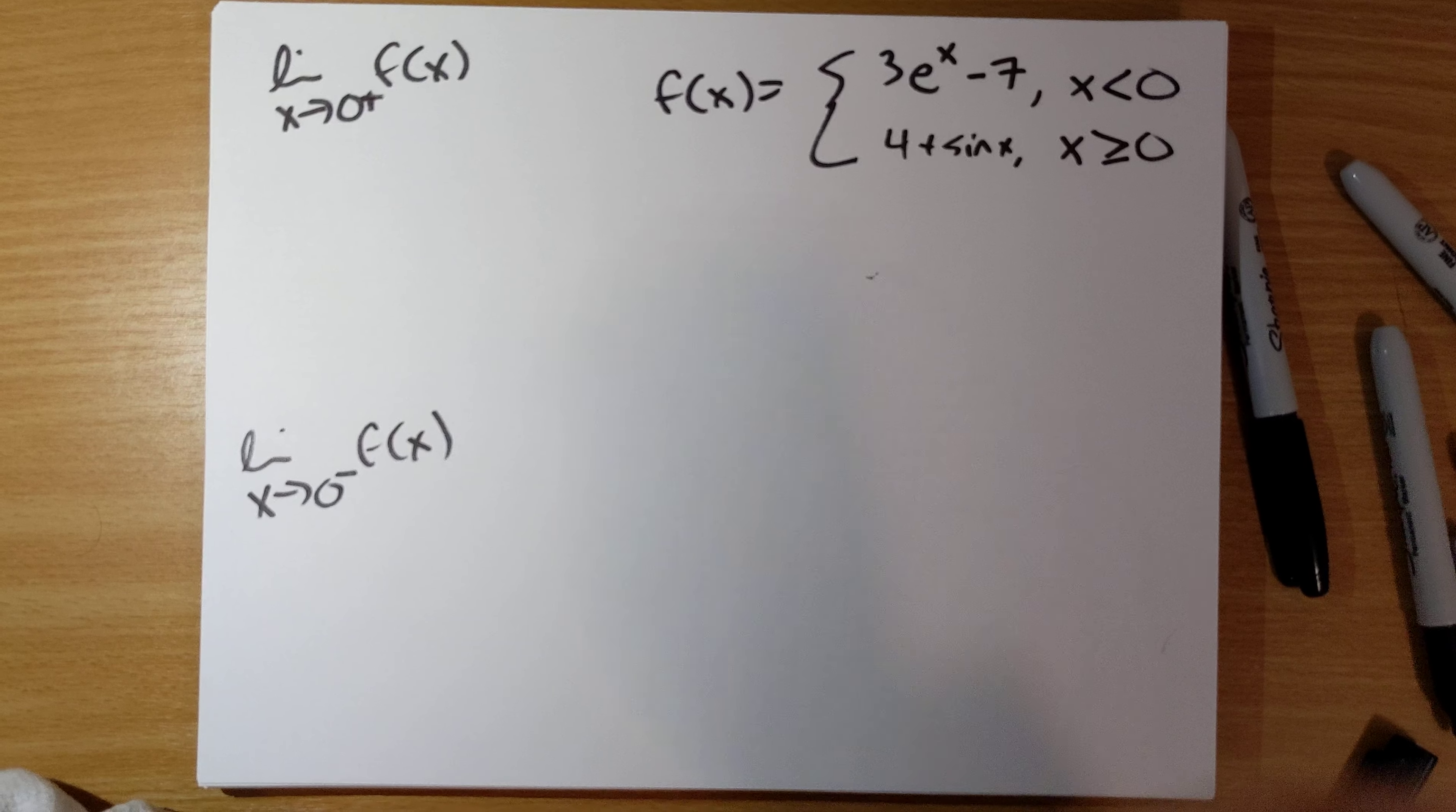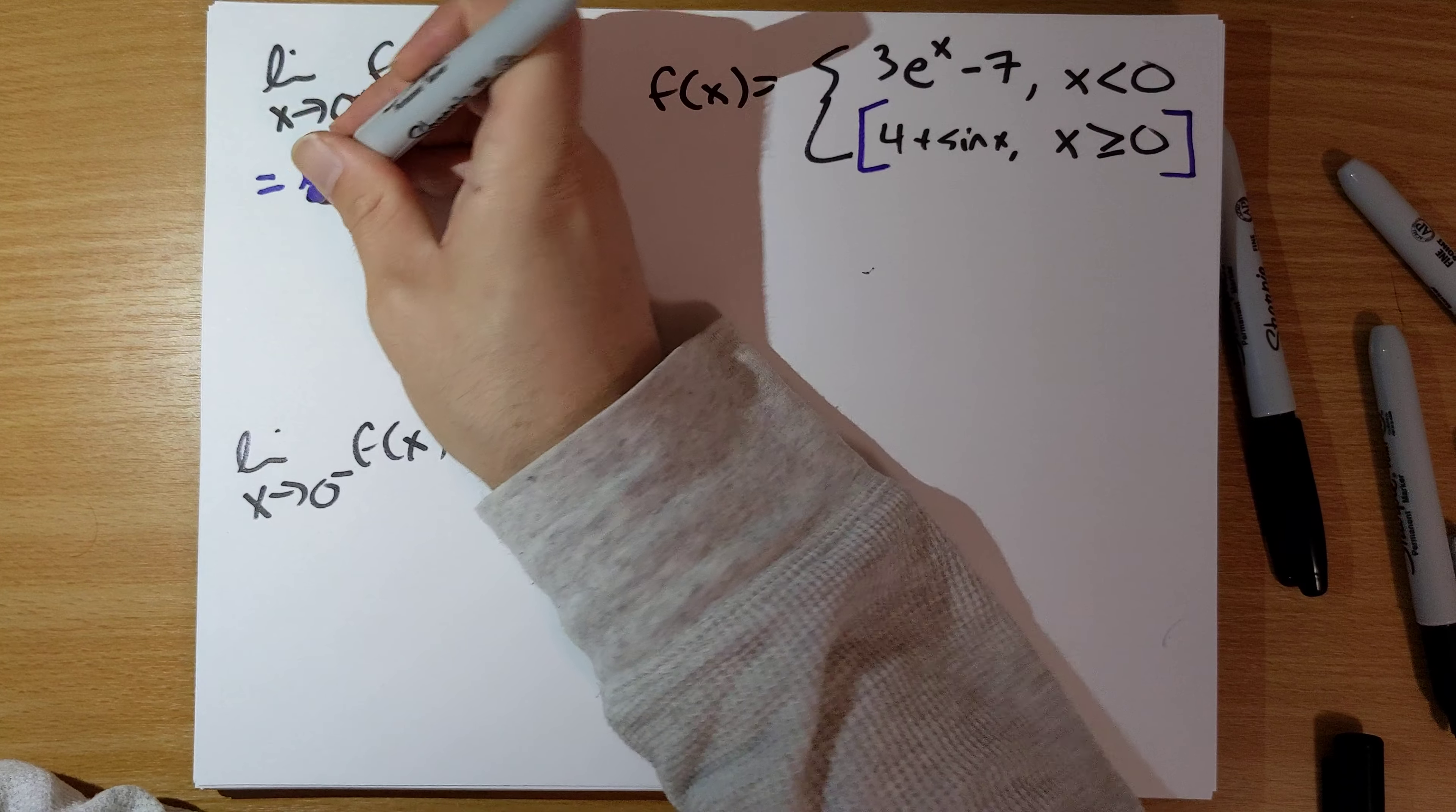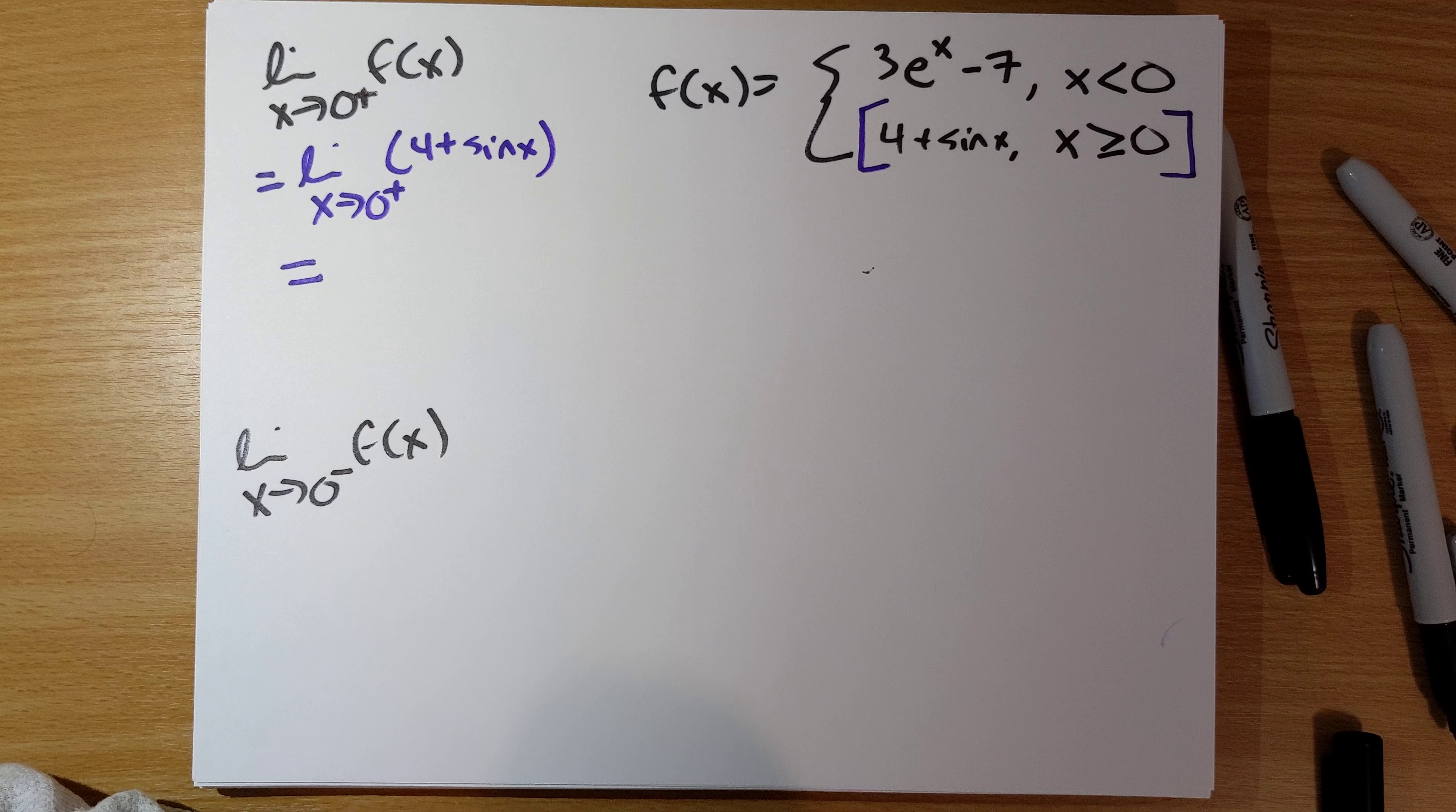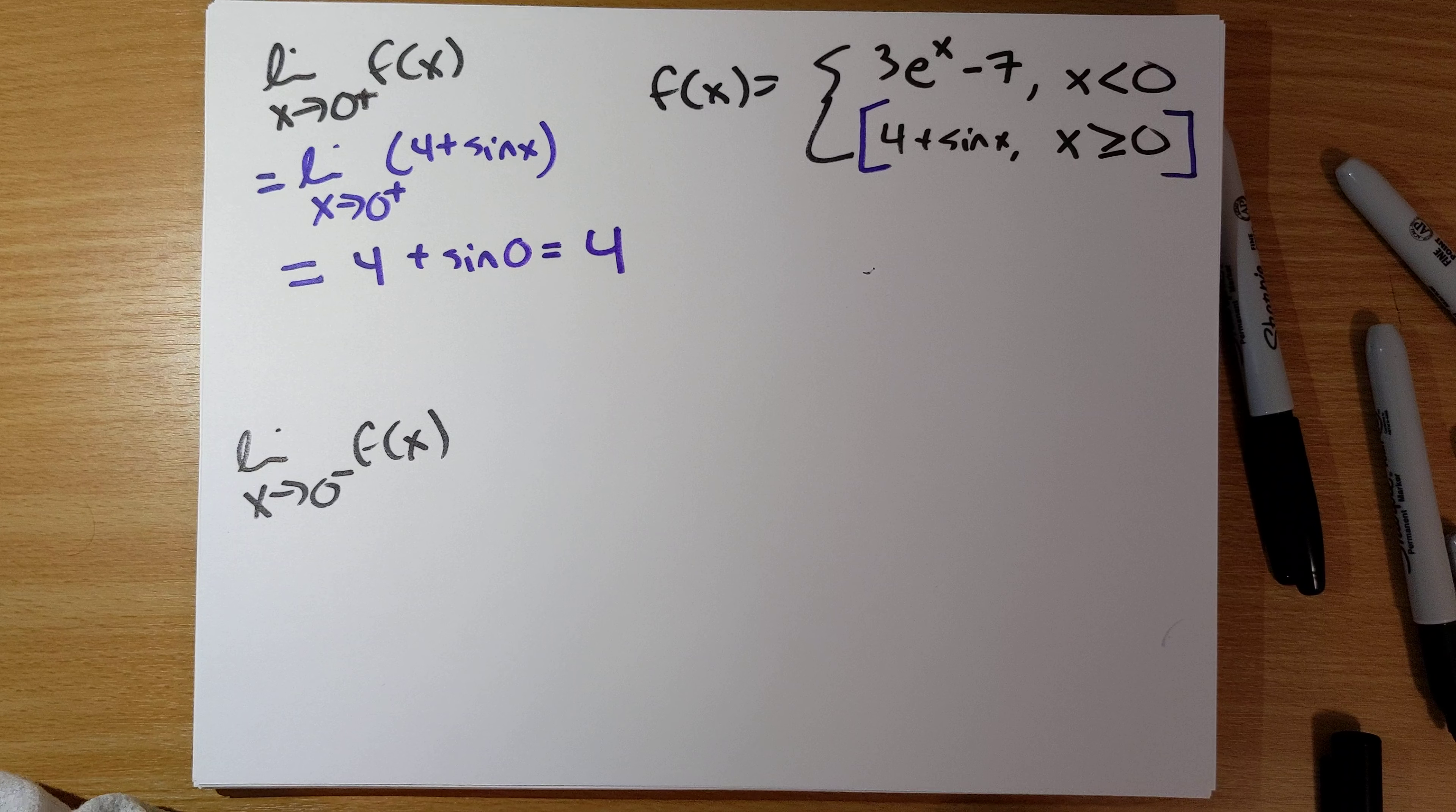So if x is going to 0 from the right, this is going to be this case here. x is greater than or equal to 0. Limit as x goes to 0 from the right of 4 plus sine x. This is a limit that we can evaluate simply by substituting in x equal to 0. So it's 4 plus sine of 0. Sine of 0 is 0, so the answer here is 4.